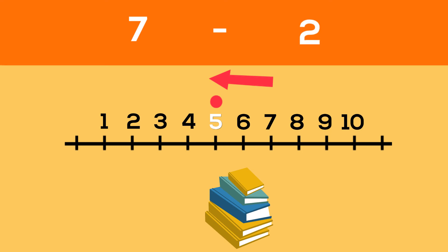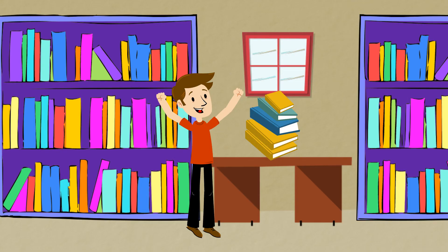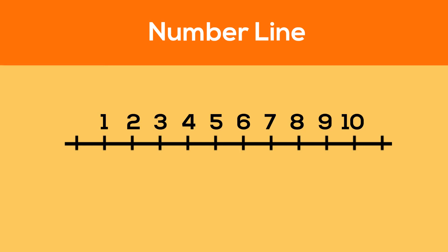We stopped at five, so this means Jake has five books left. Seven books minus two books equals five books.